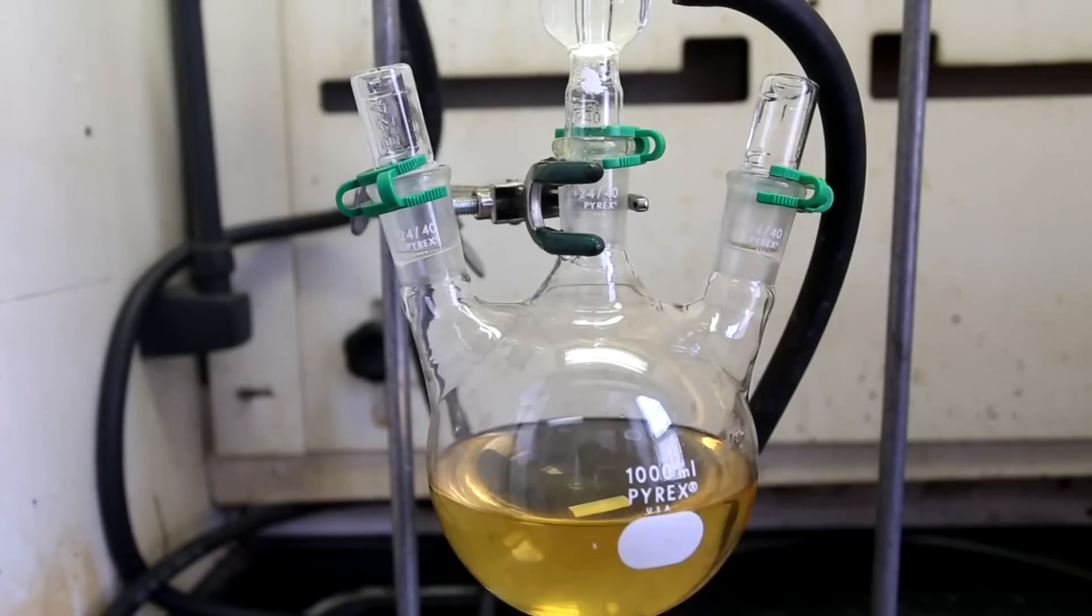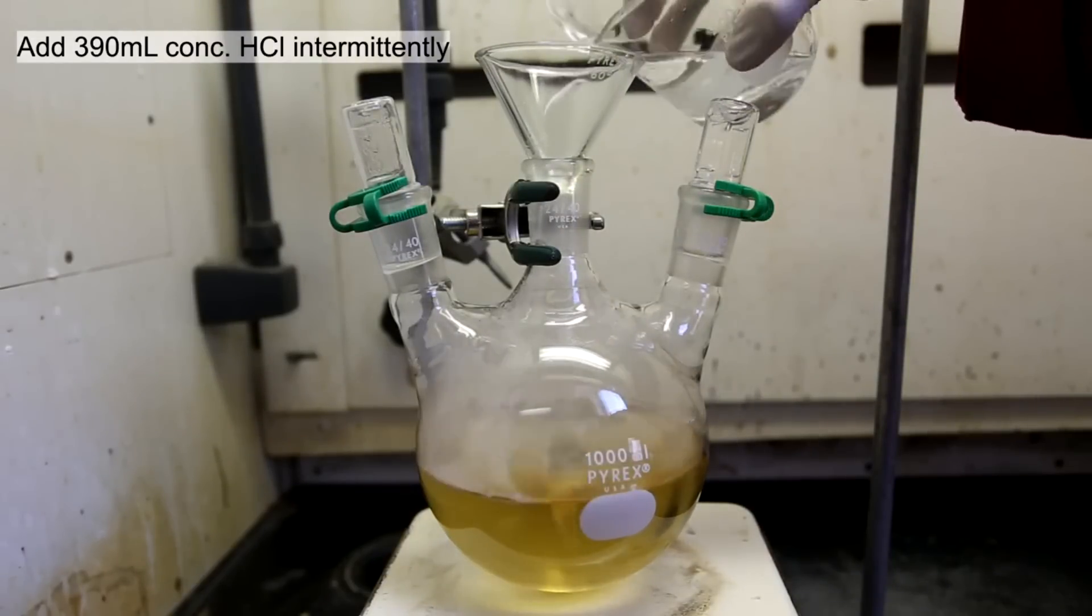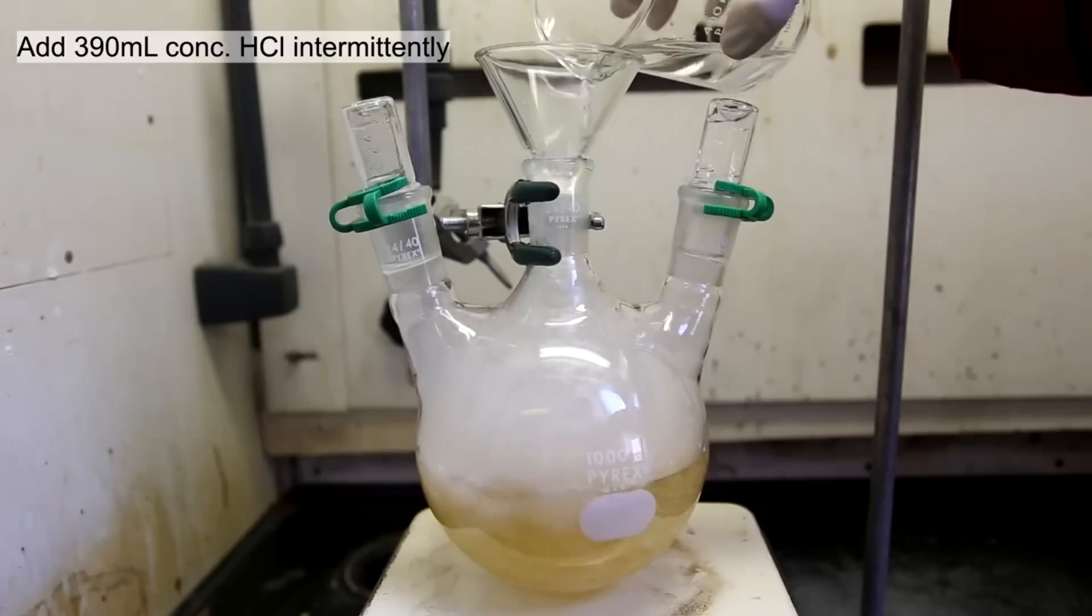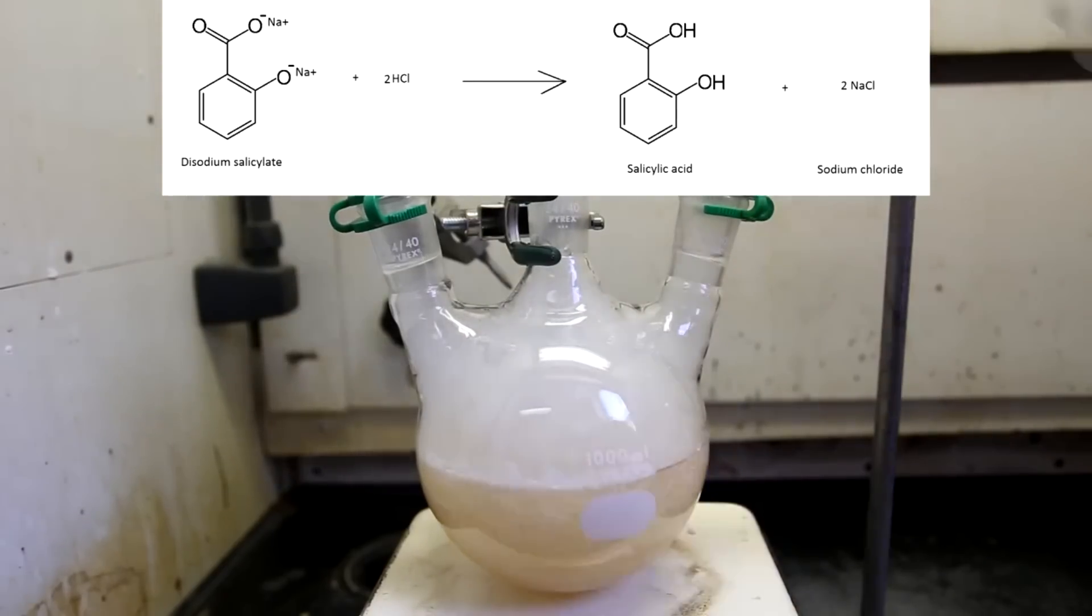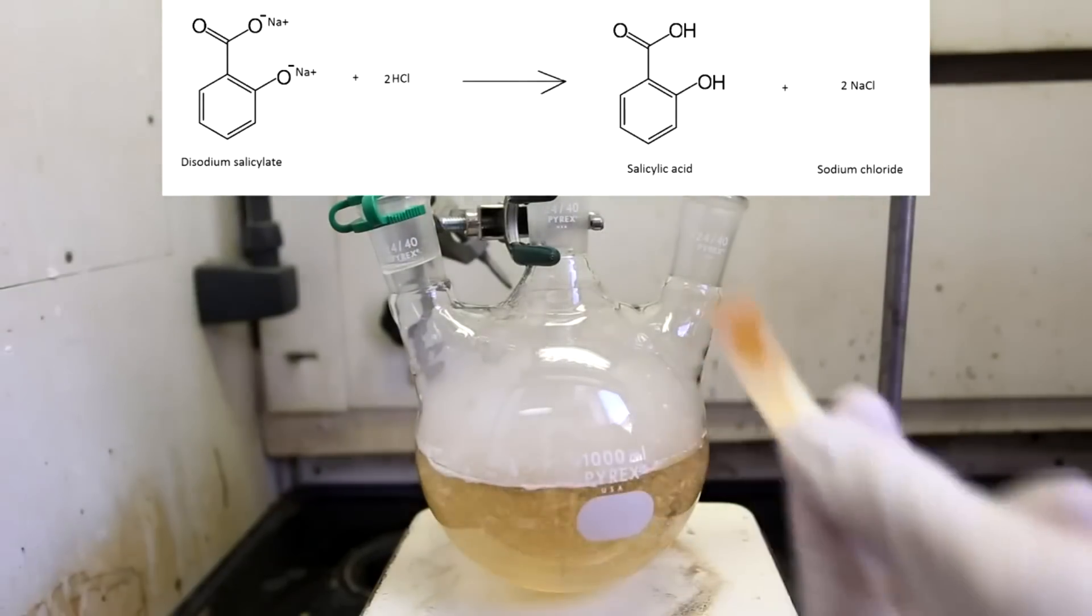After the reflux, the solution was allowed to stand and cool down until it was only warm to the touch. This basic solution was then acidified using 390 milliliters of concentrated hydrochloric acid. The hydrochloric acid neutralizes the sodium hydroxide and it regenerates the salicylic acid from its salt form, disodium salicylate.